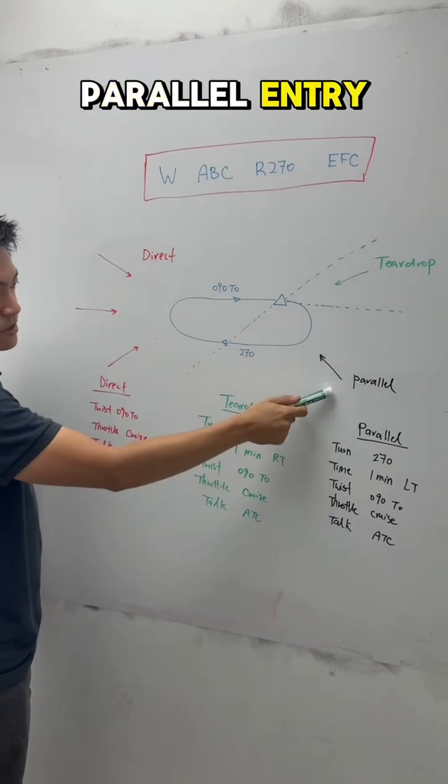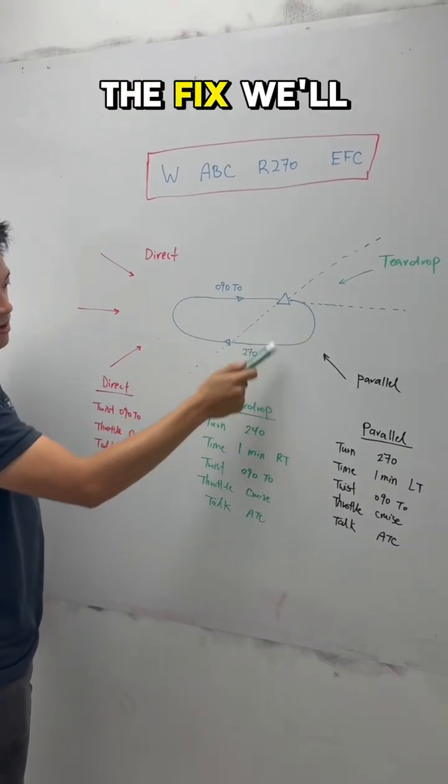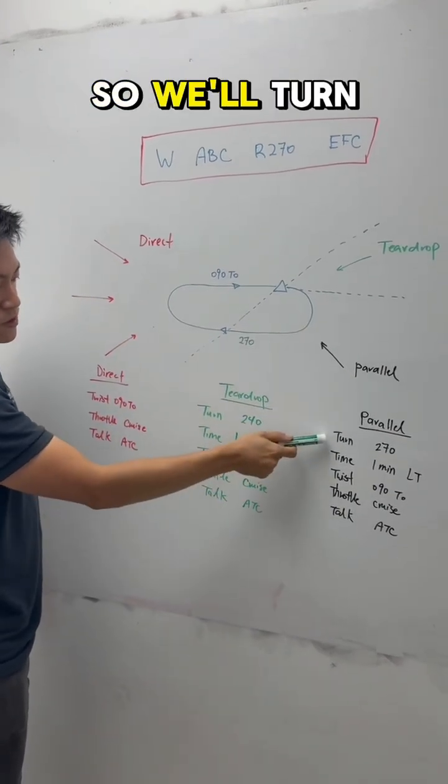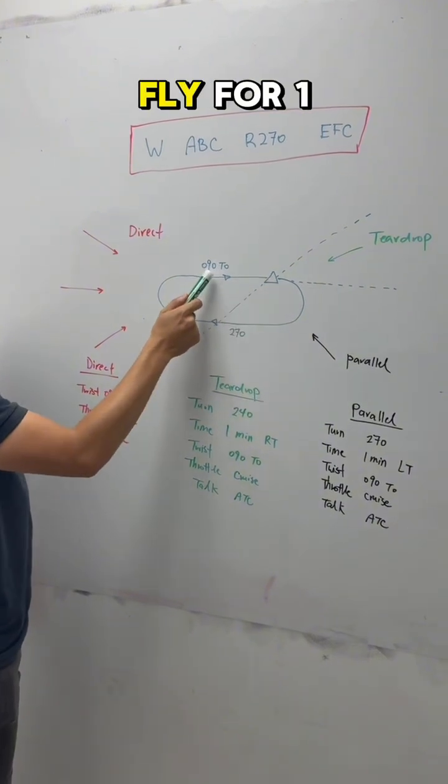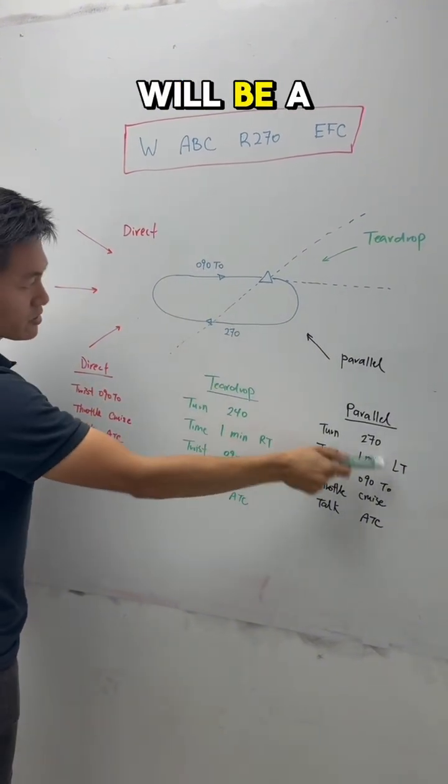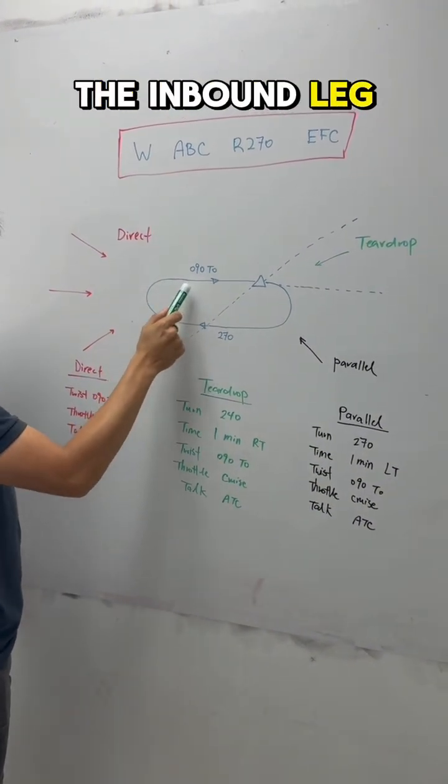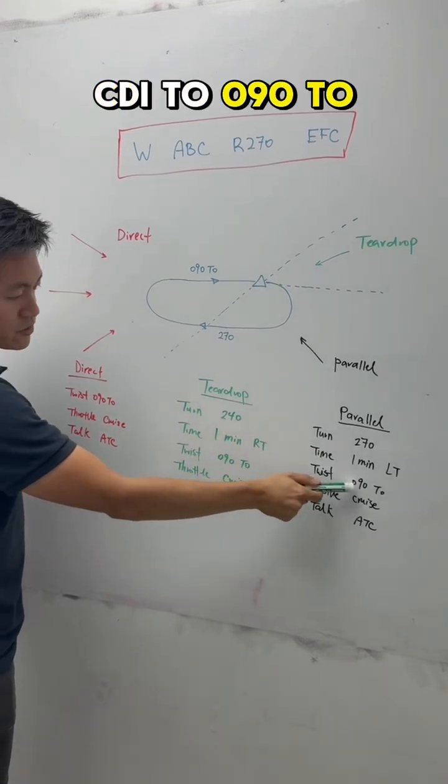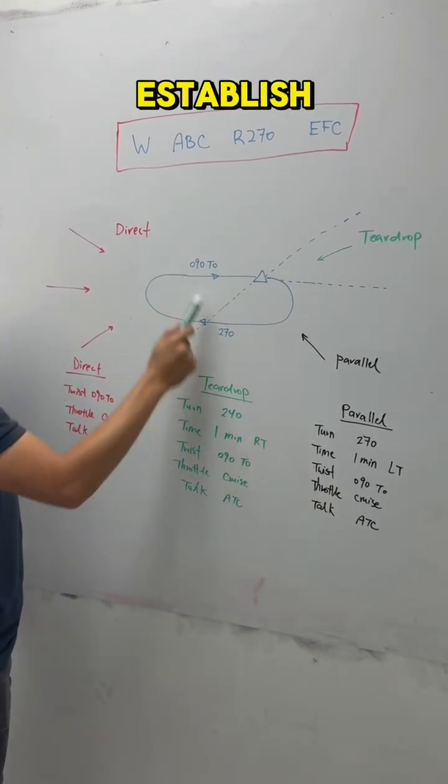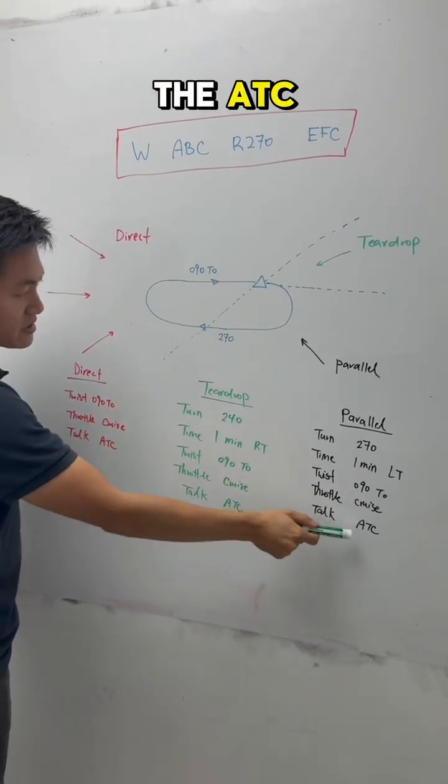So we'll start with the parallel. For the parallel entry, once you reach the fix, we'll do the 5T method. We'll turn the heading to 270, fly for one minute. After that one minute will be a left turn and we'll establish on the inbound leg. During that turn, we'll twist the CDI to 090. And once we establish, we'll follow the procedures and talk to the ATC.